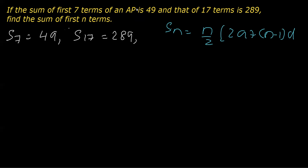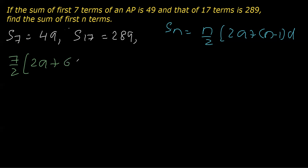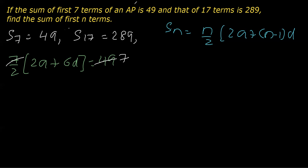Now I am going to replace this Sn with the formula where n is 7. So this is 7 over 2 bracket 2 times a plus (n minus 1), and 7 minus 1 is 6, so it is 6d equal to 49. You can see that the 7s cancel, and if I take 2 common from here this 2 gets reduced. So what we get is a plus 3d equals 7. This is the first equation.